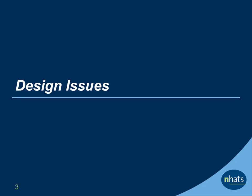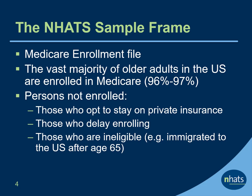Let's start with the design of NHATS. NHATS samples participants from the Medicare enrollment file. The vast majority of older adults in the U.S. are enrolled in Medicare. Older adults not enrolled in Medicare include those who opt to stay on private insurance for some period after age 65, those who delay enrolling, and those who are ineligible — for example, older adults who immigrated to the U.S. after age 65.